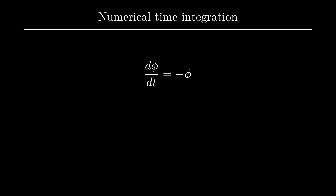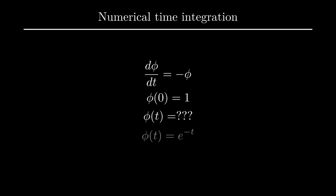Suppose we had the differential equation dphi/dt equals negative phi, and we knew that at time 0, phi is 1. How can we work out what phi is at all other times? As this is an intentionally simple example, anyone familiar with solving ordinary differential equations will tell us the function is e to the minus t. We can verify this by plugging it into the differential equation and the initial condition, and seeing that it satisfies both. This is called the analytical solution.